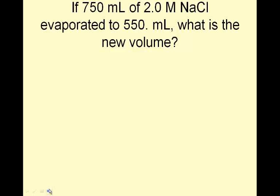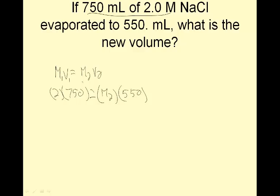M1, 1.6, V1, 174 equals, usually, to 1 liter. So, my new volume is 1,000. Now, I've got to make sure my units match. This is milliliters, this is liters, so I converted liters into milliliters. M2 equals 1.6 times 174 divided by 1,000, and I got 0.278 molar. Makes sense, it got diluted. Determine how to make it. 750 milliliters of 2 molar NaCl evaporated at 550, what is the new volume? Again, I'm doing a dilution thing. M1V1 equals M2V2.